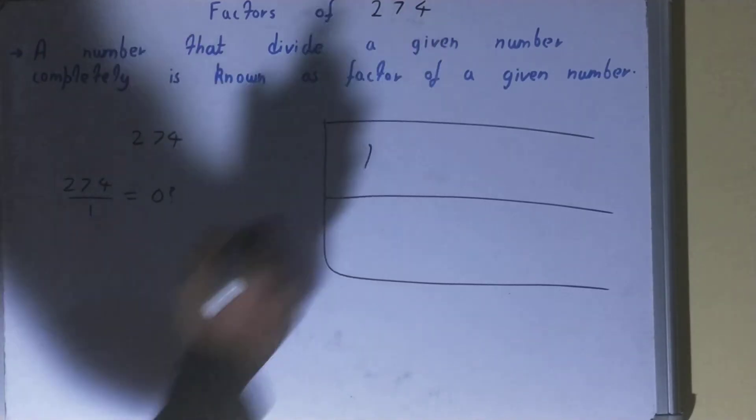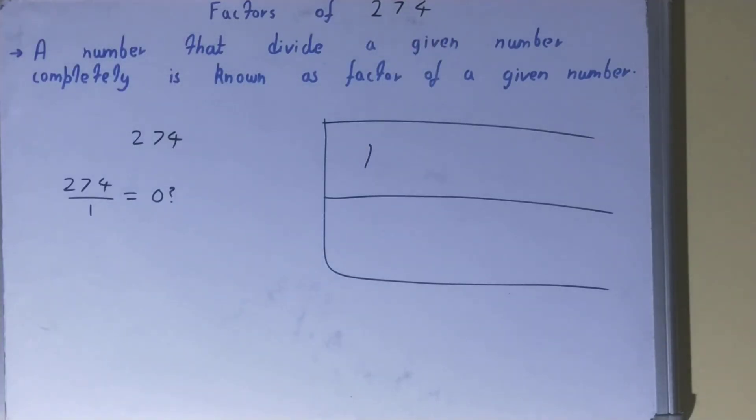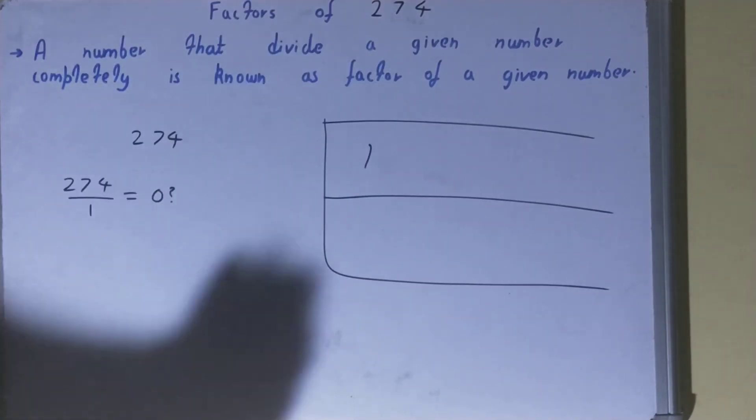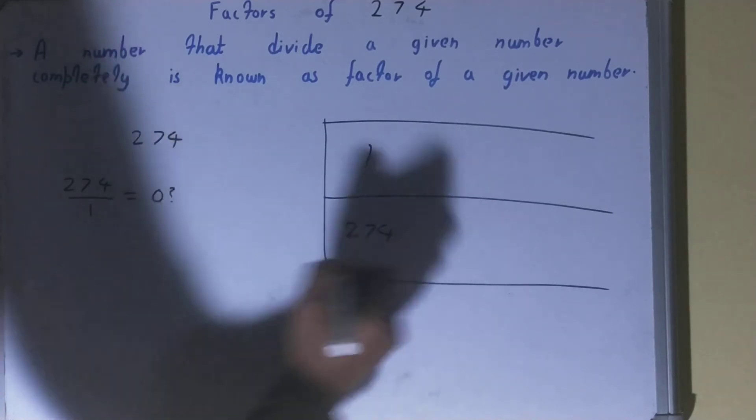So because you'll get the remainder zero, you can say one is the factor of 274. So one, we can write it over here in the factor list. And with the help of this one, we can find out another factor. How? One into what times is 274? One into 274 times.